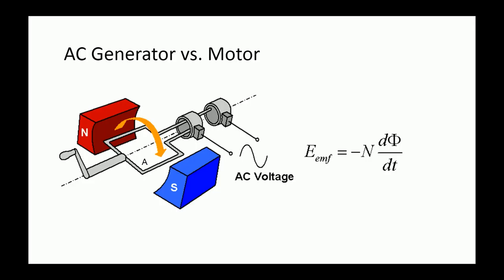AC can be produced using a device called an alternator. This device is a special type of electrical generator designed to produce alternating current. A loop of wire is bound inside a magnetic field, which induces a current along the wire. Because the wire spins and enters a different magnetic polarity periodically, the voltage and current alternate on the wire, and an AC voltage waveform is produced. The operation principle of a generator is based on electromagnetic induction, defined by Faraday's law as stated on the right side of this slide.